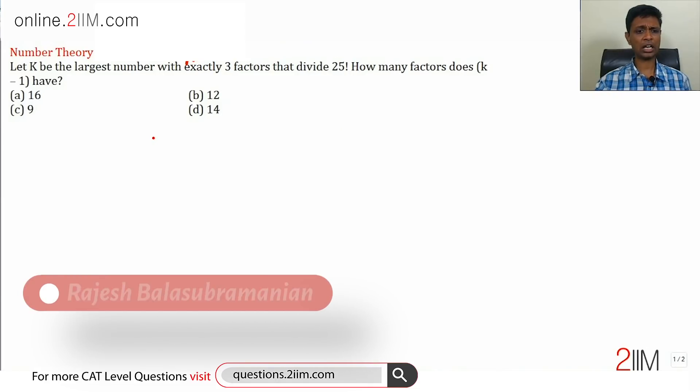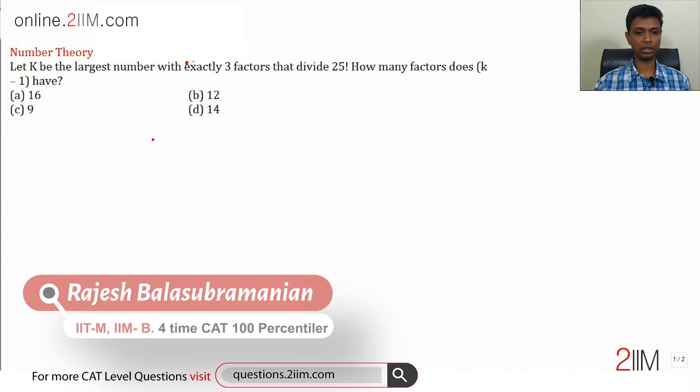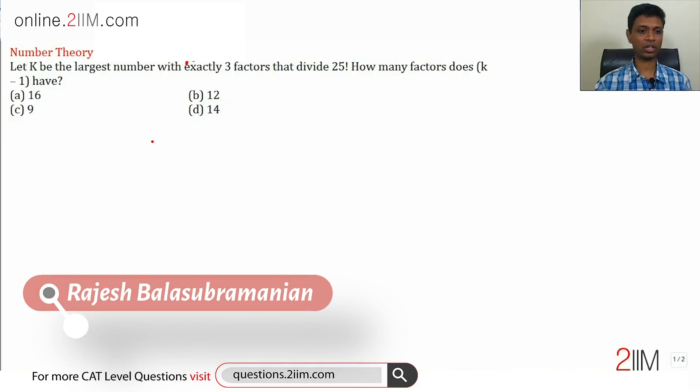Let k be the largest number with exactly three factors that divides 25 factorial. How many factors does k minus 1 have?